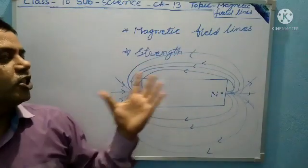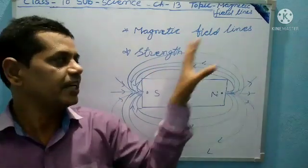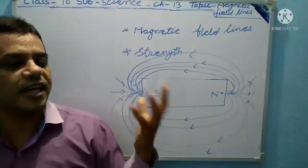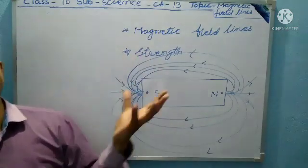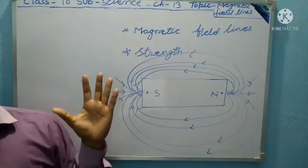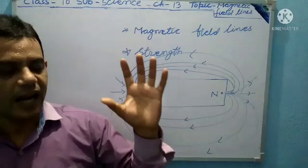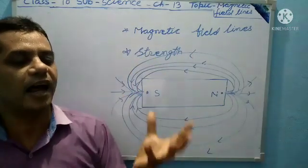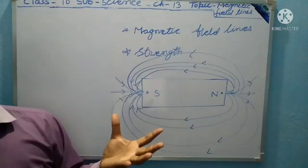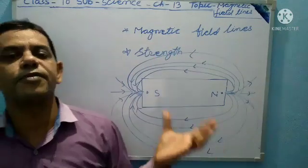The magnetic field lines never intersect each other — no line cuts another. When magnetic field lines are parallel and equidistant, they represent a uniform magnetic field. That is the property of magnetic field lines.